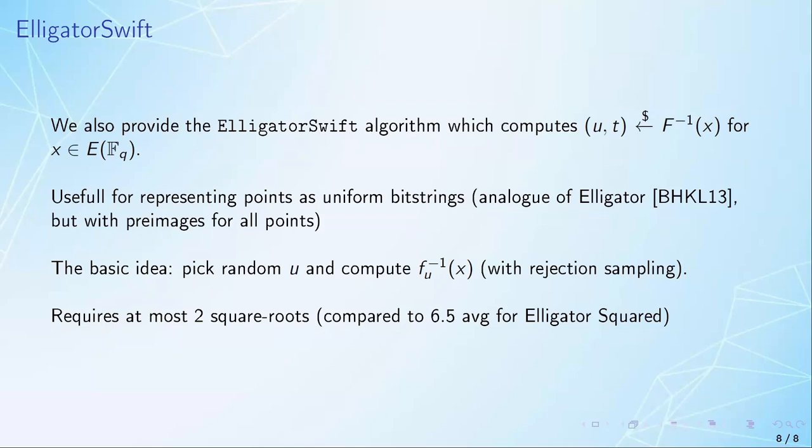Because the fu's are not regular, it means that for any given u, it may be that x has no pre-image. So in that case, you just have to restart, and from there, you just have to do a bit of rejection sampling to ensure uniformity.